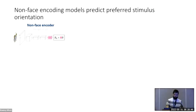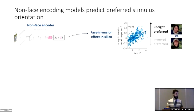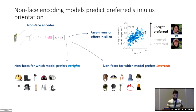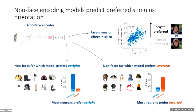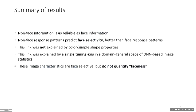Finally, we discovered that these non-face encoding models make striking predictions about the face inversion effect. For faces, the non-face encoding model predicted the well-known face inversion effect — that a face-selective neural site will respond more strongly to an upright face compared to an inverted face. We also used these models to make predictions about the preferred orientation of non-face images, selecting images for which upright or inverted orientation was preferred. Subsequent neural recordings with independent neural sites confirmed that this model-predicted orientation preference was true for real neurons as well, showing that orientation preference of face cells is not restricted to faces.